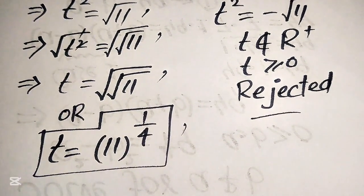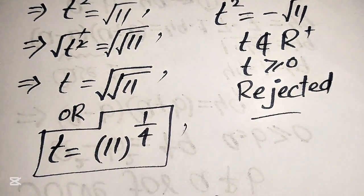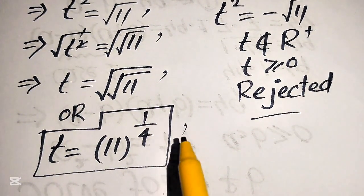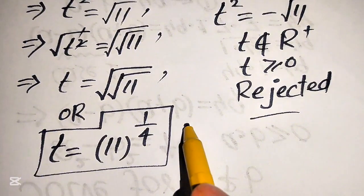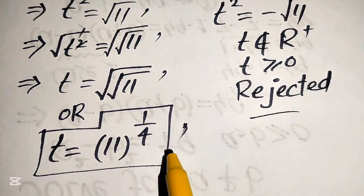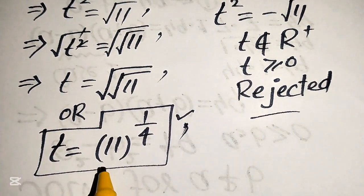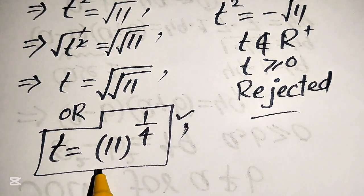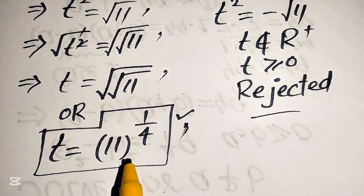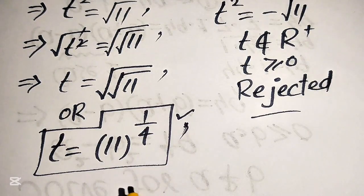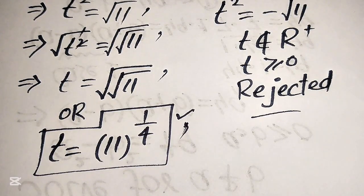Finally, we conclude that there is only one solution to the given equation: t equals 11 to the power of 1 over 4. This is the final answer. Thank you so much for watching this video — please subscribe to my channel for more exciting videos.